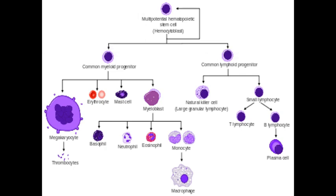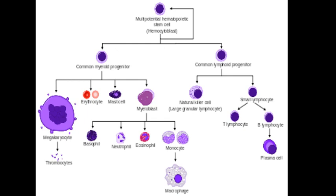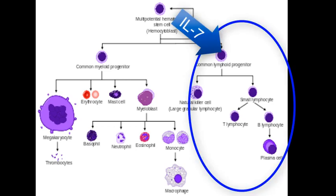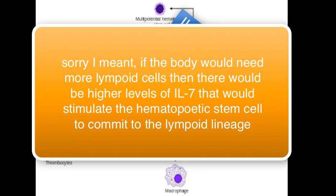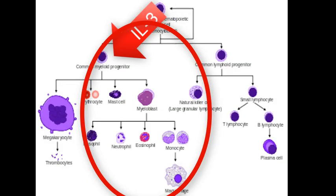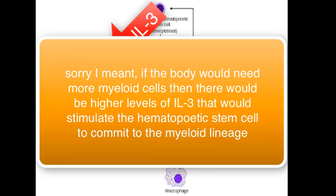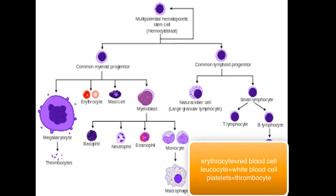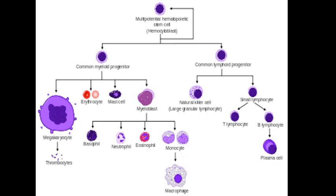These stem cells can differentiate into two lineages depending on which chemical messenger they release. If they release the cytokine interleukin-7, they go towards the common lymphoid progenitor, giving rise to lymphocytes and natural killer cells. If they release interleukin-3, they go towards the myeloid progenitor cells. In the myeloid progenitor, we find most blood cells: erythrocytes (red blood cells), platelets (thrombocytes), and most white blood cells such as the granulocytes — neutrophils, eosinophils, and basophils — as well as one agranulocyte, the monocyte, which later forms macrophages. Another agranulocyte is our lymphocytes.